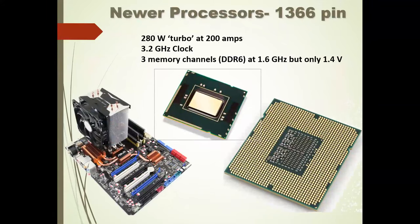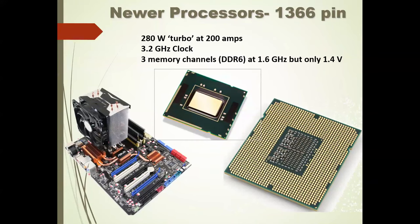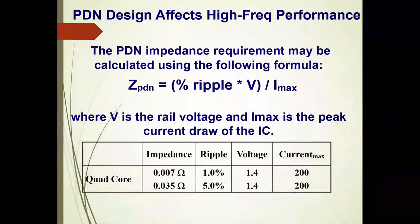Newer processors have not only a lot of pins and interconnect, but in turbo mode this one dissipates 280 watts, requiring nearly 200 amps at its 3.2 GHz clock with three DDR6 memory channels at 1.6 GHz. The power distribution network must be designed to fix the high-frequency performance of today's most advanced chips.